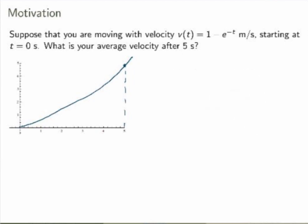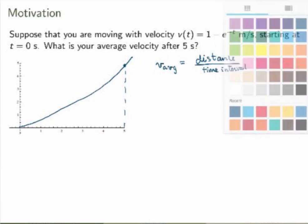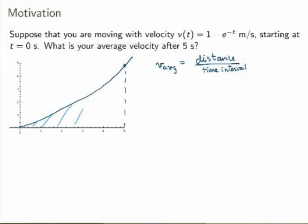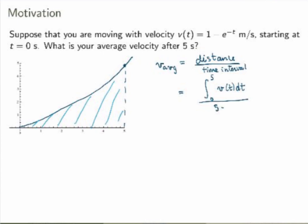What I want is the average velocity between t equals 0 and t equals 5. The average velocity will be given by the distance covered over these 5 seconds divided by the time interval, which is just 5 seconds in this case. I also know how to calculate the distance — if you know the velocity function, the distance is given by the area under the curve. So I can rewrite that as the integral between 0 and 5 of my velocity function, divided by the time interval 5 minus 0.